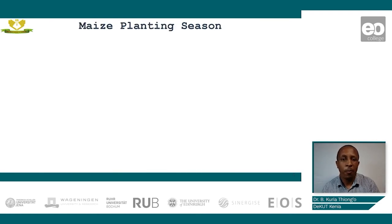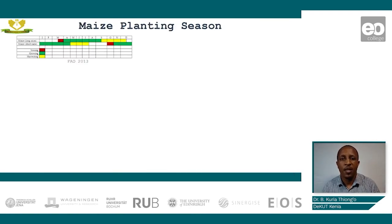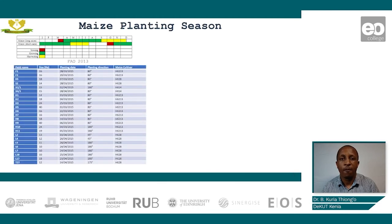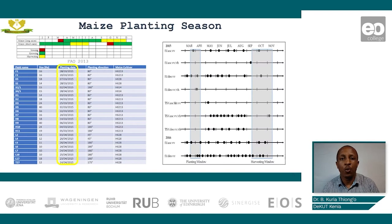There are two main planting seasons in the country. The first is the long rain season and the second is the short rain season. The long rain season runs from March to September, whereas the short rain planting season runs from October to April. Going by the farm records collected during fieldwork, most farmers rely on the long rains for planting. This information is crucial especially when collecting remote sensing data, since you will know the window in which to collect images.